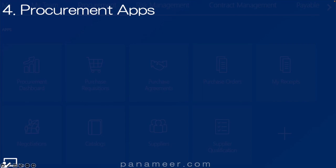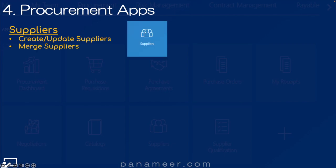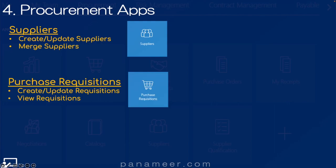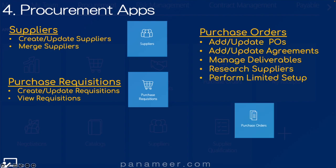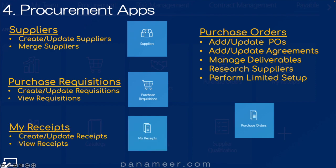Now we quickly walk through the different procurement applications. The Suppliers application — we obviously need suppliers. The Requisitions application — the output of the supply orchestration process are purchase requisitions. The Purchase Order application — the requisitions get approved into POs and those orders get sent out. And finally, the My Receipts or Receipts application, which creates the receipts for those different orders.